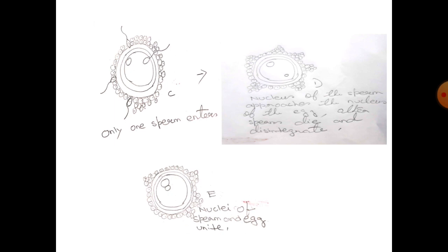The nucleus of the sperm approaches the nucleus of the egg, and the rest of the sperms die and disintegrate. Then the nuclei of the sperm and egg unite — this process is called fertilization.